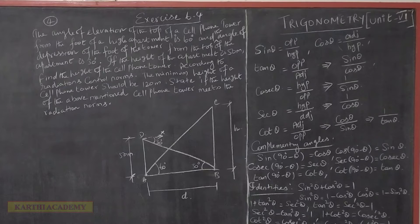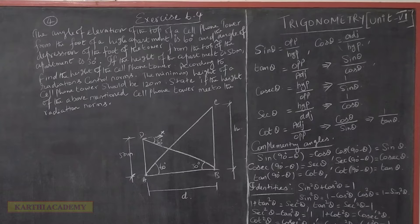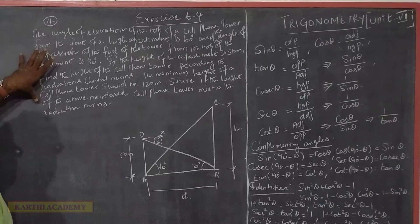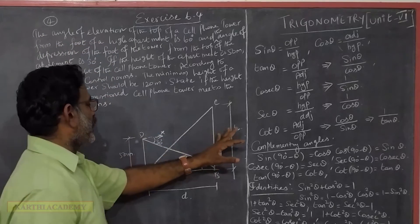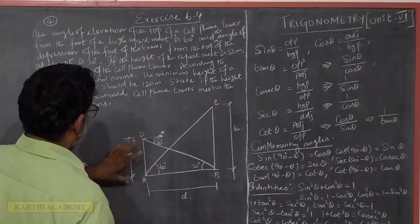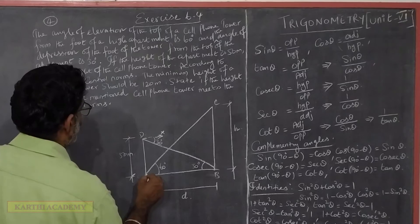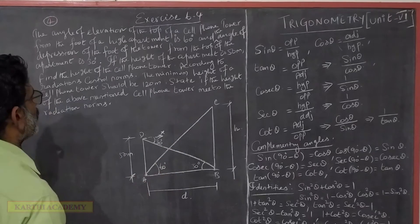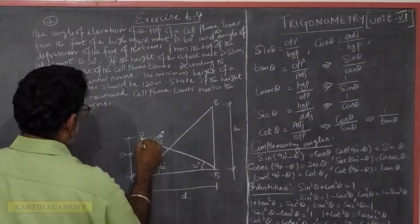According to radiation control norms, the minimum height of the cell phone tower should be 120 meters. We are talking about a cell phone tower, a high apartment, 50 meters high, and an angle of elevation. Look at the tower and the top of the tower — that is the angle of elevation, which is 60 degrees. The top of the tower is a foot up.